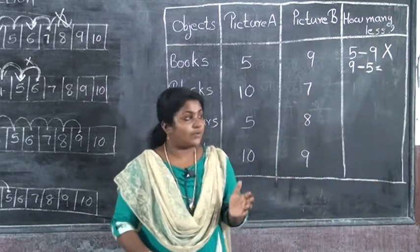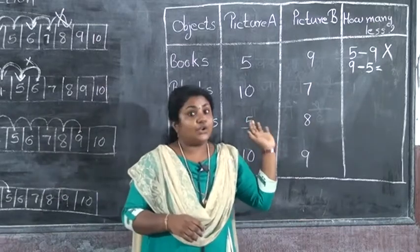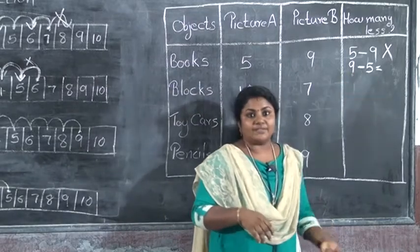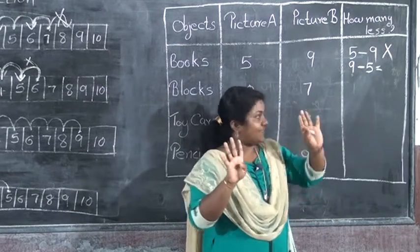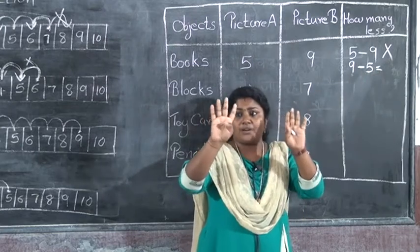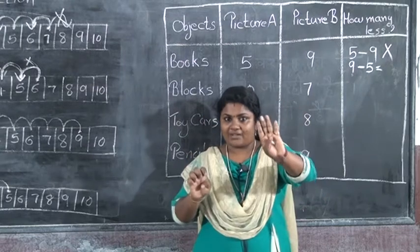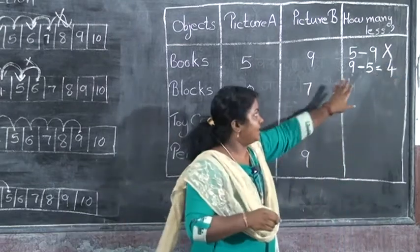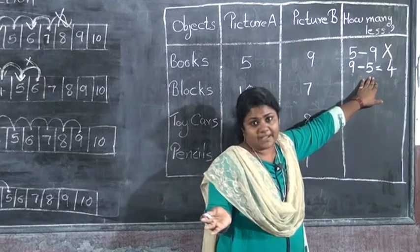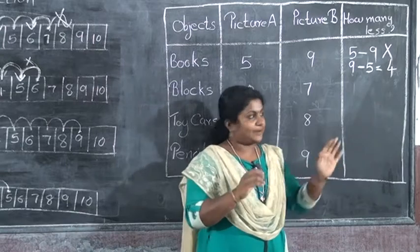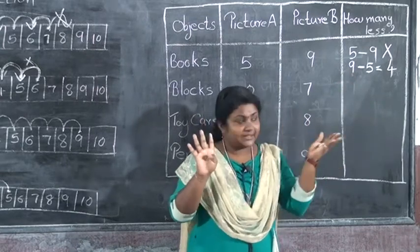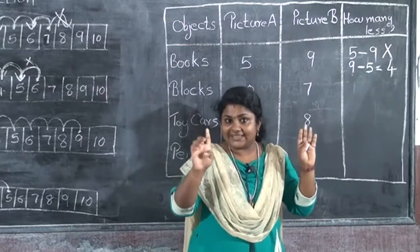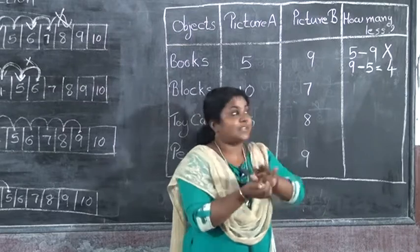For 9 minus 5, there is no number strip here. So we can use our fingers. Take 9 fingers and fold 5 fingers for the number we are subtracting: 1, 2, 3, 4, 5. How many are left? Only 4. So the answer is 4. Understood? When there is no number strip, we take our fingers and subtract. Show the biggest number — 9 fingers. Fold 5 fingers: 1, 2, 3, 4, 5. The balance is 4, so the answer is 4.